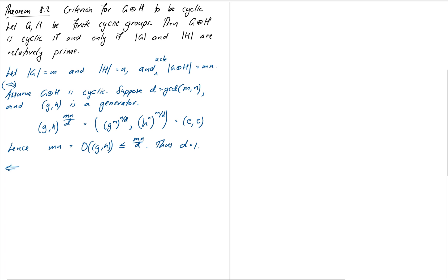Now we'll prove the opposite direction. This time we'll suppose that they are relatively prime and want to show that our group is cyclic. We know G and H are themselves cyclic, so let G be generated by little g and H be generated by little h.